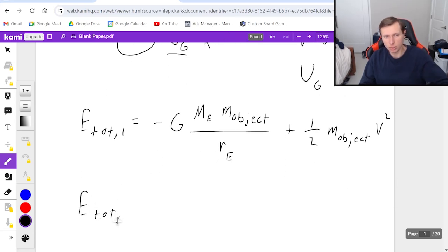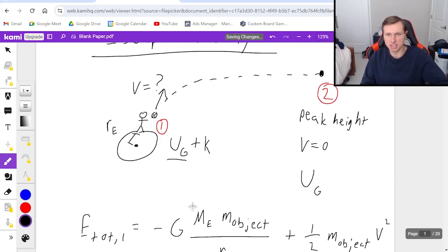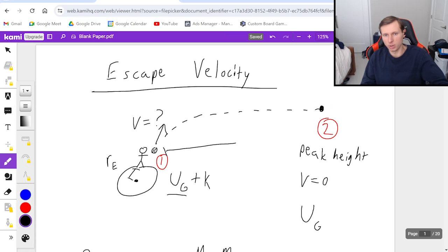Then for e total 2, like we said, it's just gravitational energy, which is going to be negative G, mass of the Earth, mass of my object, and then divided by my distance. Now the question is, what is this distance from point 1 to point 2?